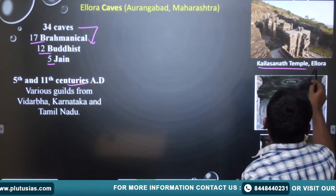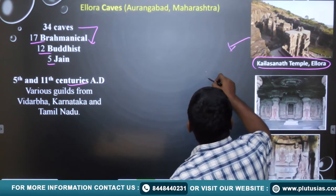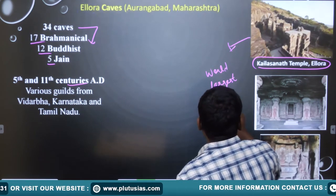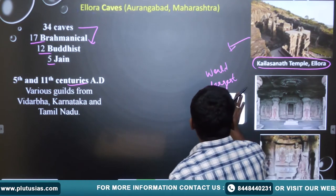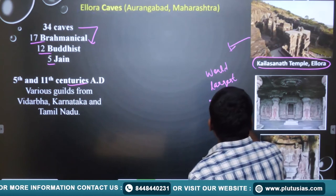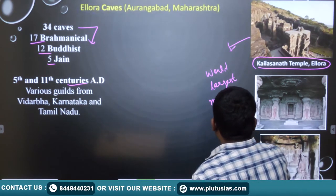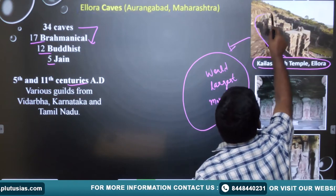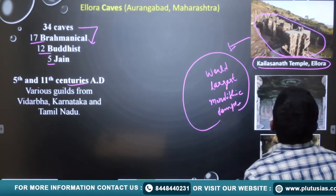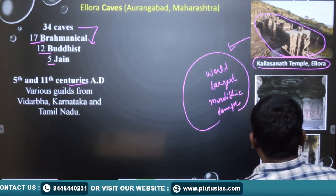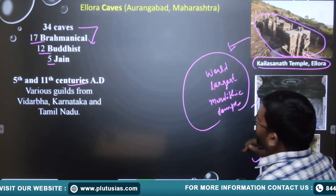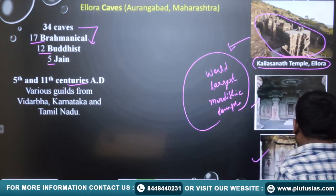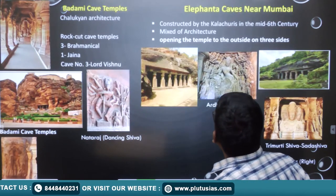In Ellora, the Kailasa temple is the most important example — it is the world's largest single monolithic temple, carved out from one stone. This temple belongs to Brahmanism. So in Ellora we have Brahmanism, Jainism, and Buddhism all found in these caves.